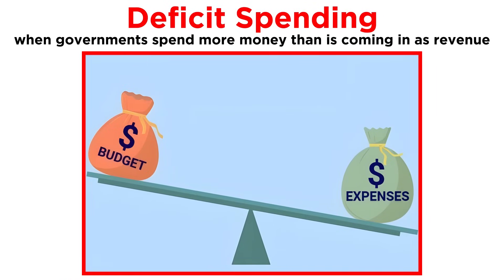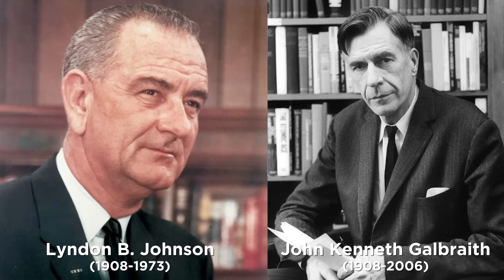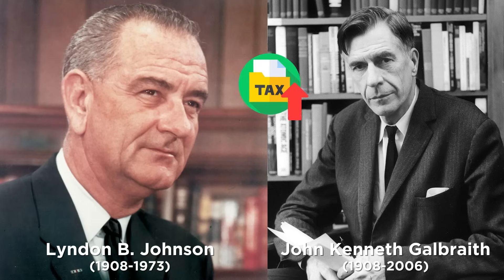Deficit spending is when governments spend more money than is coming in as revenue, meaning it has to borrow more to pay the bills. Galbraith advised President Lyndon Johnson and greatly influenced Johnson's costly Great Society welfare programs. Taxes were also higher during the Johnson administration, compared with the Reagan administration two decades later.